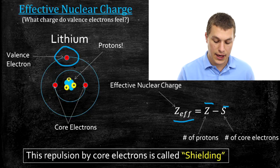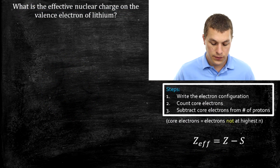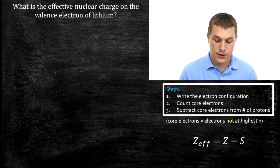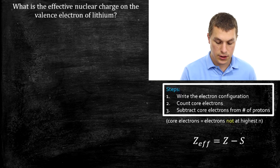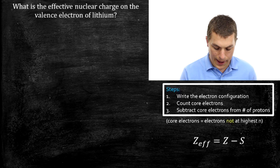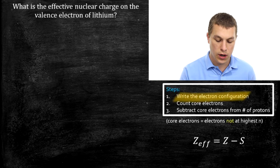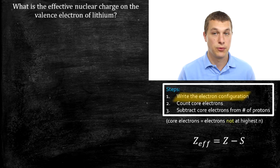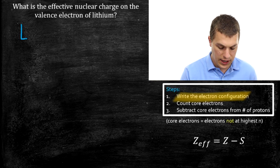Now I'm going to show you how we calculate that. I've broken this process into three steps. The very first thing we're going to do is write the electron configuration, because that lets us count our core and valence electrons. We have to know how many core electrons we have if we want to use our equation. For lithium, you probably already know how many core electrons we have.